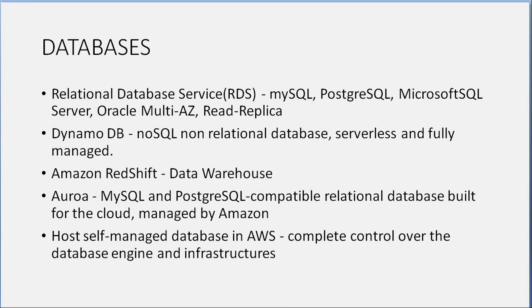Databases: Relational Database Service (RDS) includes MySQL, PostgreSQL, Microsoft SQL Server, Oracle, multi-availability zone, and read replicas. DynamoDB is a NoSQL, non-relational, serverless and fully managed database. Amazon Redshift is a data warehouse. Aurora is a MySQL and PostgreSQL compatible relational database built for the cloud and managed by Amazon. Self-managed databases in AWS give you complete control over the database engine and infrastructure.